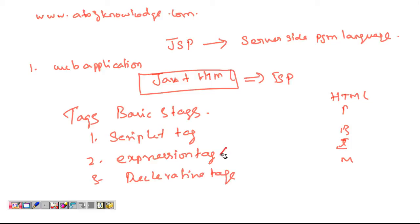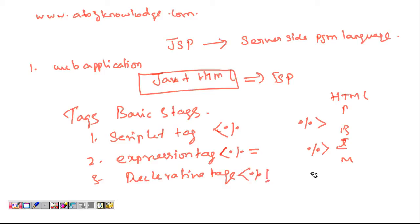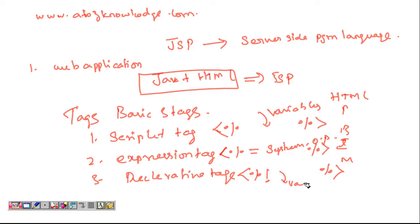Expression tag starts with open angle bracket, percentage symbol, equals sign, and ends with percentage and close angle bracket. Scriptlet tag starts with open angle bracket, percentage symbol, and closes with percentage and close angle bracket. Scriptlet tag is for declaring Java variables. Expression tag is for printing something, like System.out.println in Java. Declarative tag is for declaring variables as well as methods.